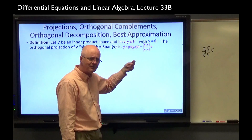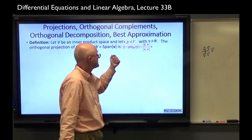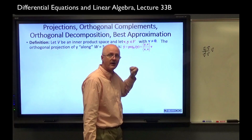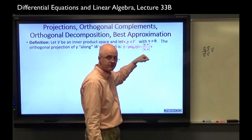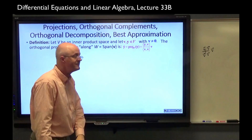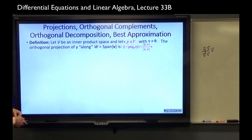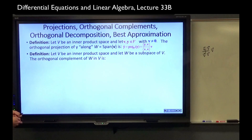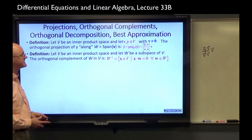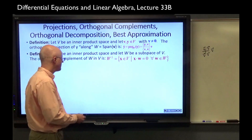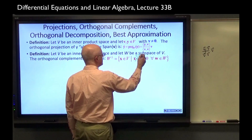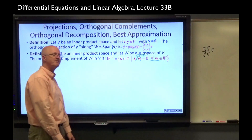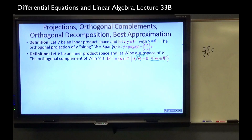You can define orthogonal complements. If W is a subspace of V, W-perp is the set of all X in V whose inner product with every w in W is zero — all vectors in V that are orthogonal to all vectors in W under the given inner product. Here's our orthogonal decomposition theorem, just like before, using inner products instead of dot products. This formula is completely analogous to what we did with dot products.